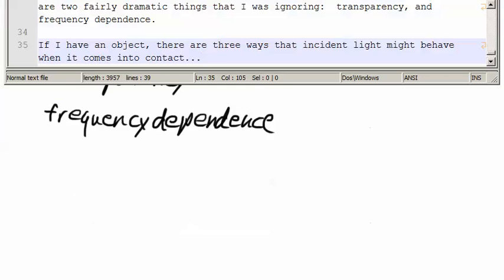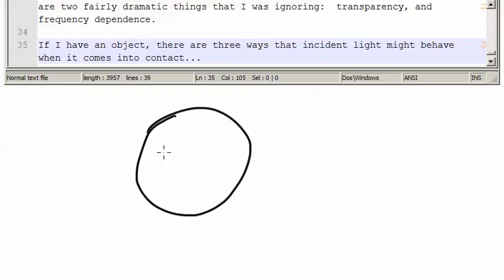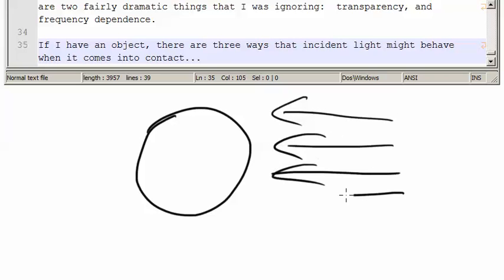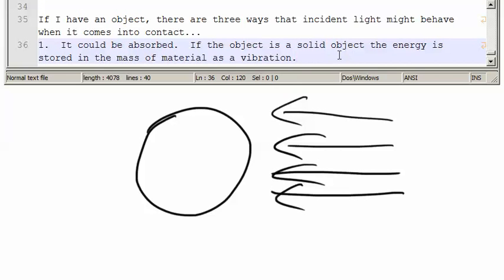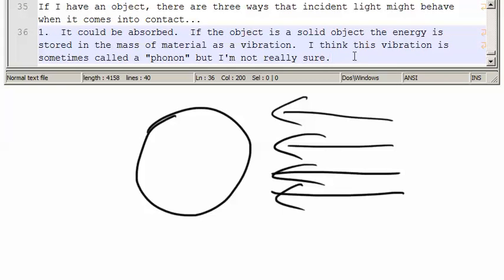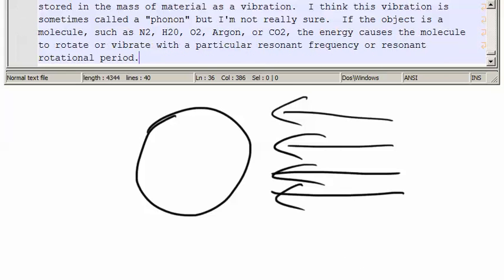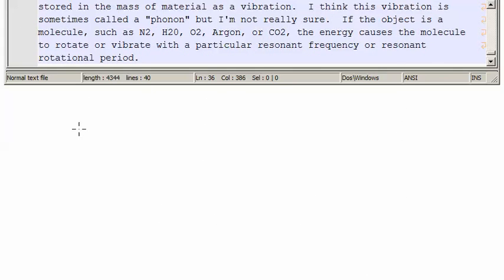Now, if I have an object, there are three ways that incident light might behave when it comes into contact. Number one, it can be absorbed. If the object is a solid object, the energy is stored in the mass of a material as a vibration. I think this vibration is sometimes called a phonon, but I'm not really sure. However, if the object is a molecule,